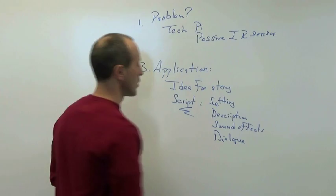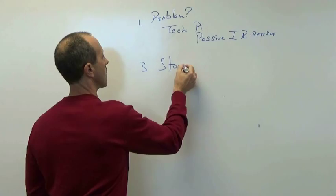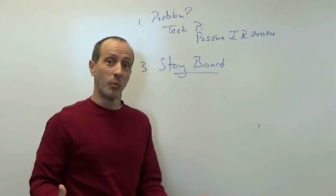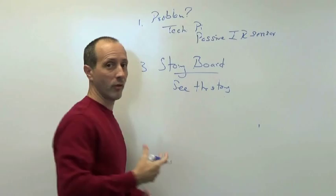We have to create a storyboard for that script. So we have to create a storyboard. The storyboard is actually going to be the chronological events that we can see. So we want to be able to see the story before we create the story.